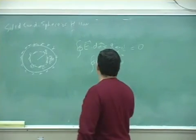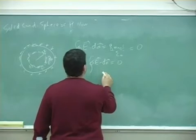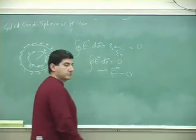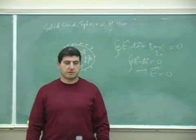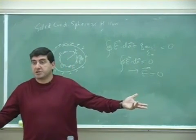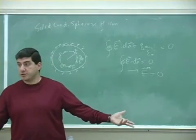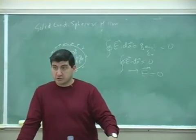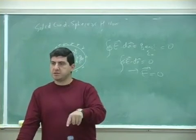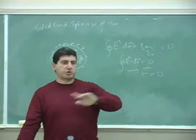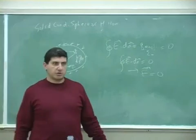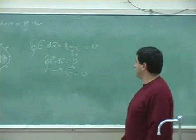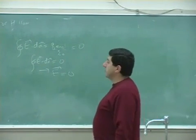So that means this concludes that the E is zero inside of a sphere, which is the same answer that we get using the ring argument. Gauss's law gave us the same answer but much quicker. Since the enclosed charge is zero, the electric field is zero. It's a two-second argument. As long as the enclosed charge is zero, the electric field is zero.